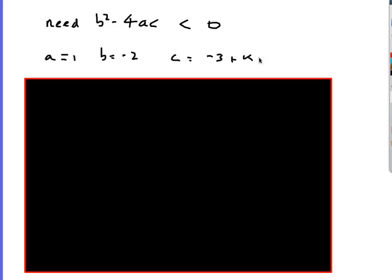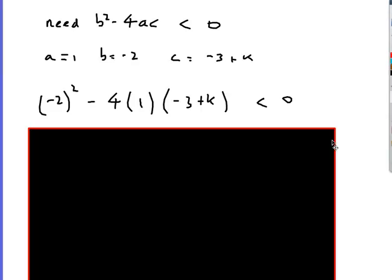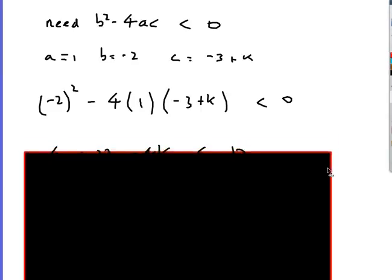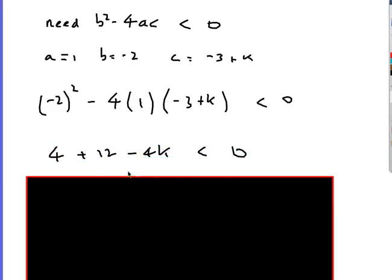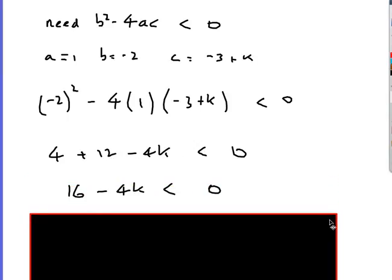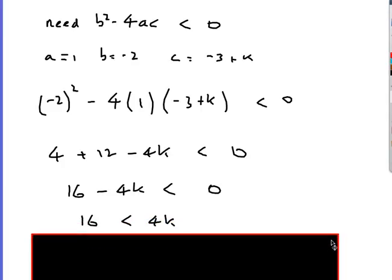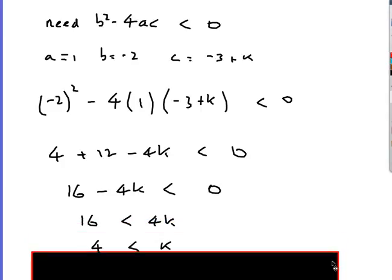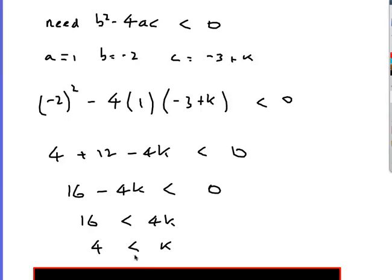Stick your numbers into the brackets. And I get 4 plus 12, take away 4k squared, less than 0. 16 minus 4k less than 0. 16 less than 4k. Therefore, k is going to be greater than 4. And again, that is my solution.